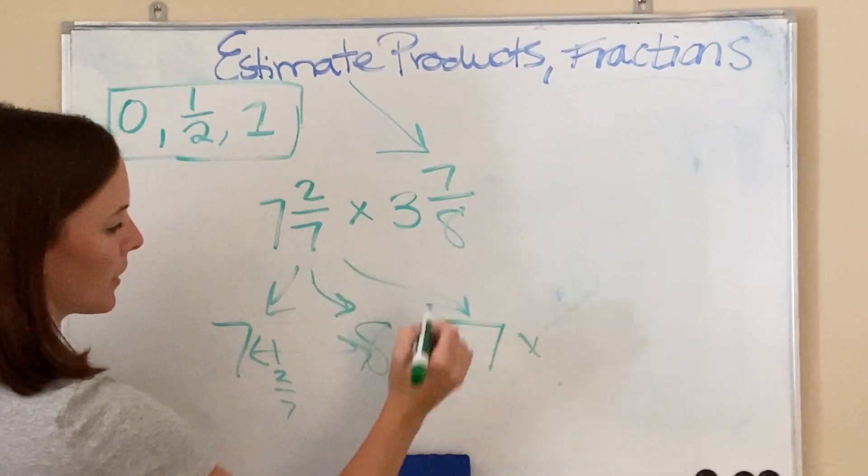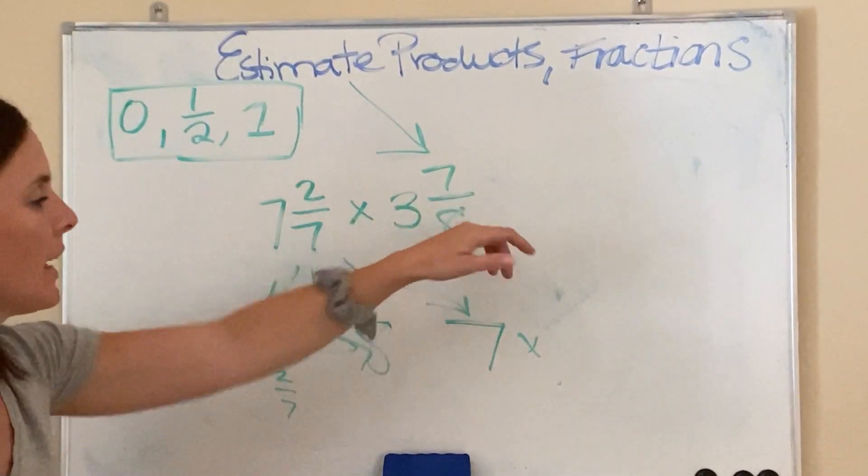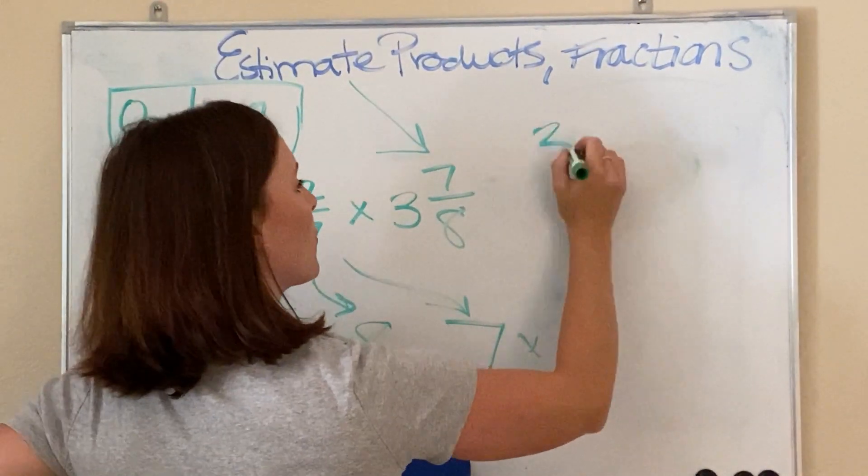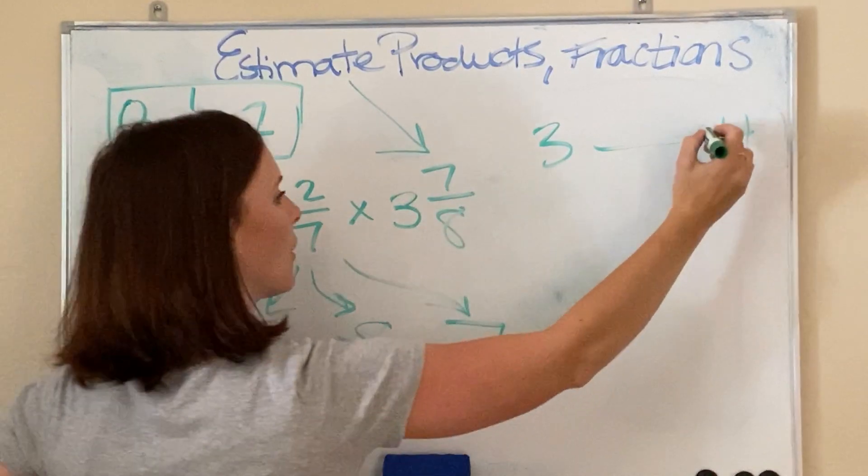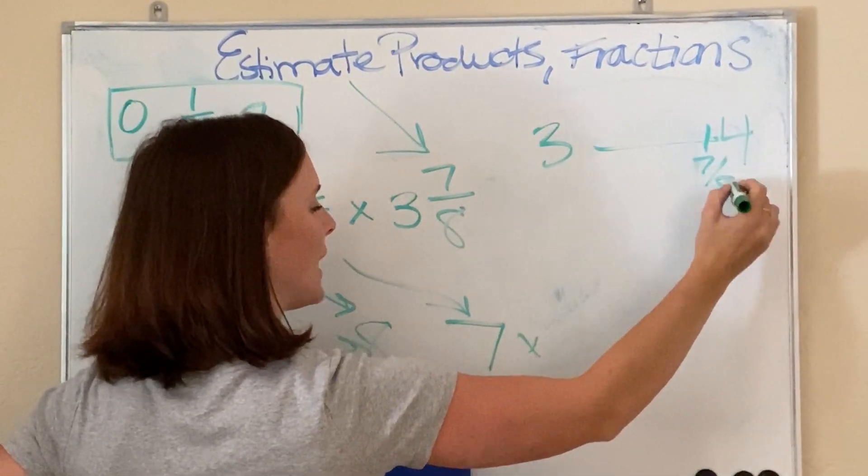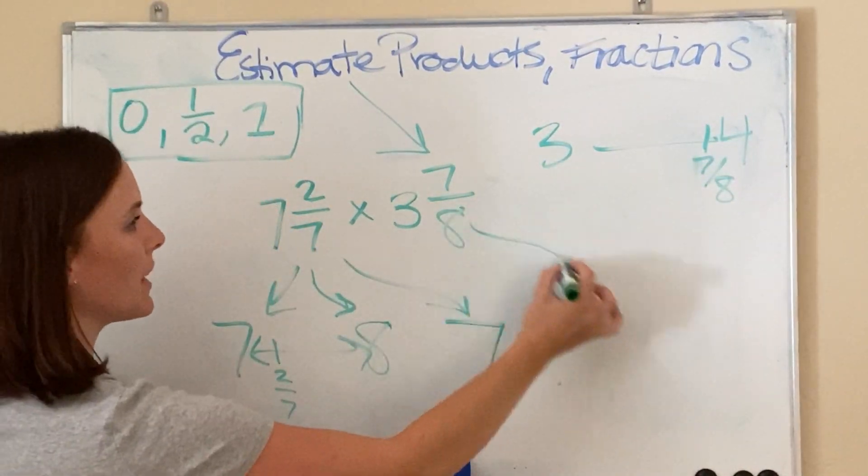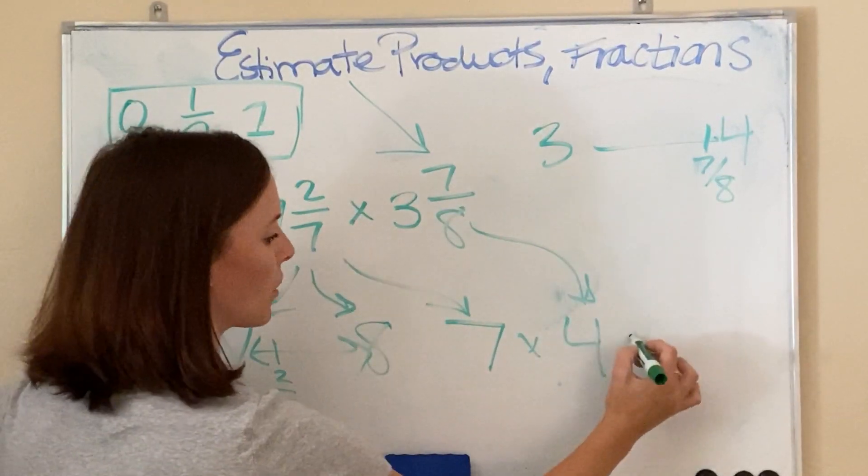So, I'm rewriting down here. And then 3 and 7/8. Well, think about 3 and then the whole number 4. Where would 7 out of 8 go? 7 out of 8 is really close to 8 out of 8 or our 4. So, 3 and 7/8 is going to round up to a 4.